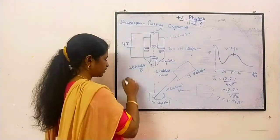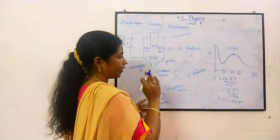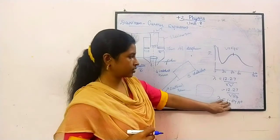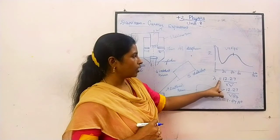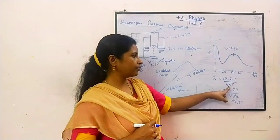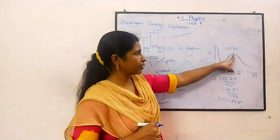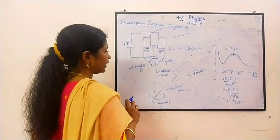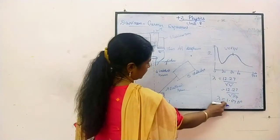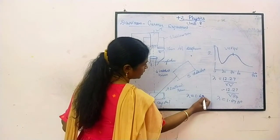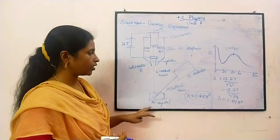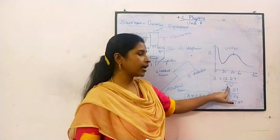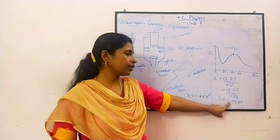That is the nickel crystal spacing. The wavelength that we are getting is 1.67 angstrom. According to the formula, when we substitute 12.275 divided by root V, this is actually de Broglie's hypothesis. In the experiment, they got that the wavelength is 1.65 angstrom. According to de Broglie's hypothesis, using this formula, we will be getting 1.67 angstrom.